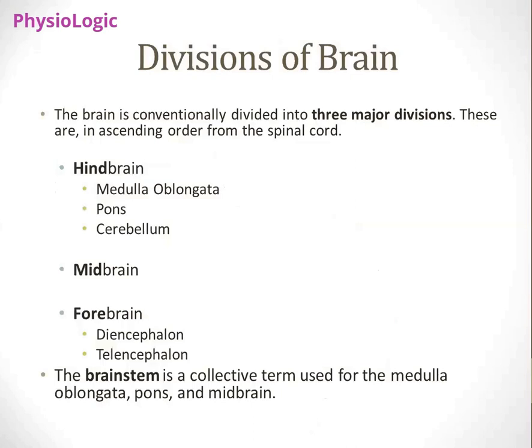The brain is divided into three main components: the hindbrain, midbrain, and forebrain. When studying the brain from the spinal cord upward, the structure that lies above the spinal cord is the hindbrain. Above the hindbrain is the midbrain, and the topmost structure of the brain is the forebrain.